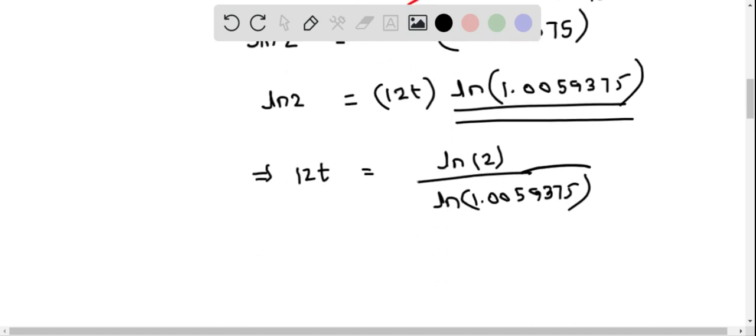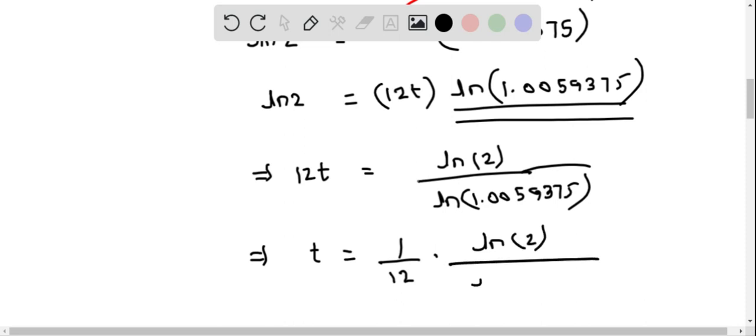To determine t, divide both sides by 12. Therefore, t = (1/12) times ln(2) / ln(1.0059375).